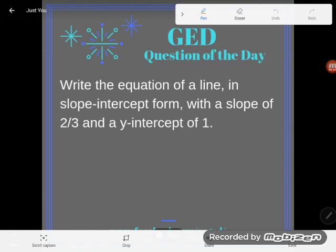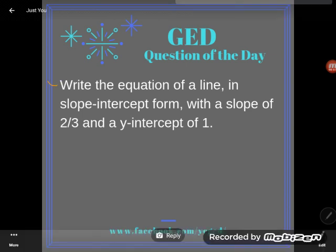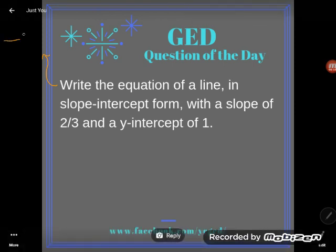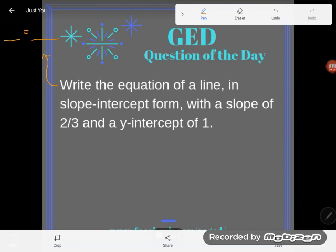So first thing this says is write the equation of a line. They're asking me to write an equation. So remember what an equation is. It's one mathematical expression set equal to another mathematical expression. So I'm looking for something with an equal sign basically. And then they tell me how to write the equation of a line in slope-intercept form.